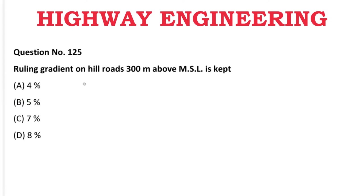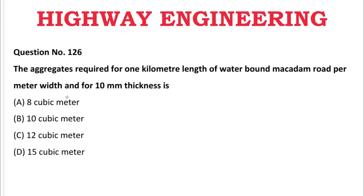Next question: The ruling gradient on hill roads 300 meters above mean sea level is — A: 4%, B: 5%, C: 7%, D: 8%. The correct answer is B, 5%.